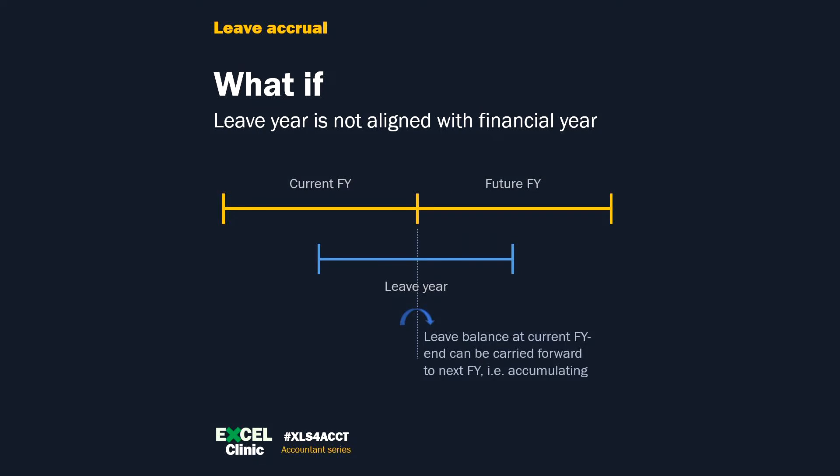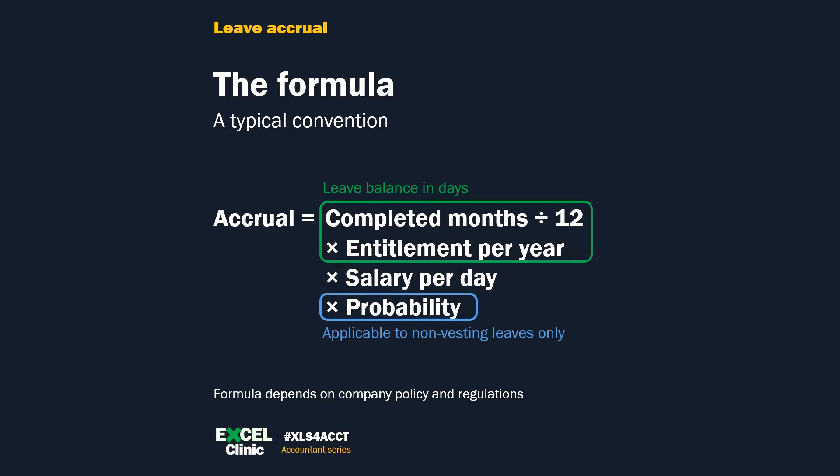One last thing before we go to Excel — the formula. The formula depends very much on company policy and regulation. A typical convention is: accrual balance equals leave balance in days multiplied by salary per day. You also need to consider the probability of employees leaving the company before utilizing the leaves. This applies if the leaves are non-vesting. If vesting, even if employees do not utilize the leave, it will be paid in cash, so the probability will be 1. In most circumstances, it is reasonable to assume all accumulating leaves will be fully utilized or paid in cash.